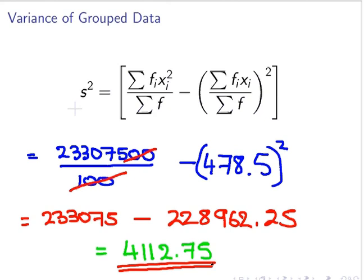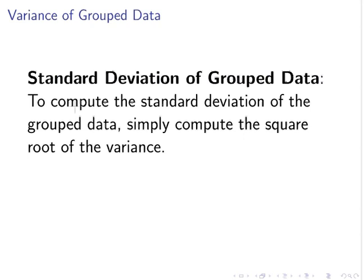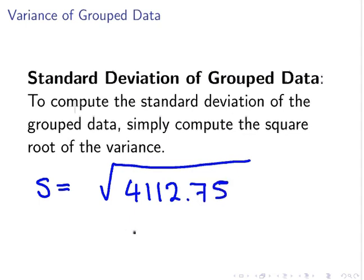What we could do lastly is to compute the standard deviation. The standard deviation simply is the square root of that. So the standard deviation s is simply the square root of 4112.75. And roughly, approximately, that's equal to 64.13. So that is the standard deviation. And that ends our presentation.